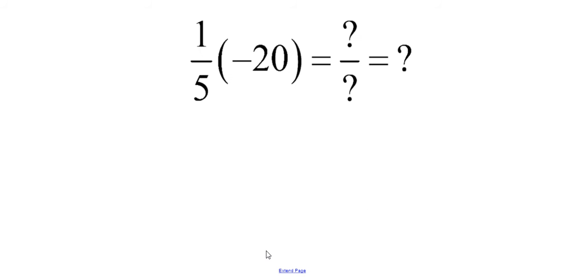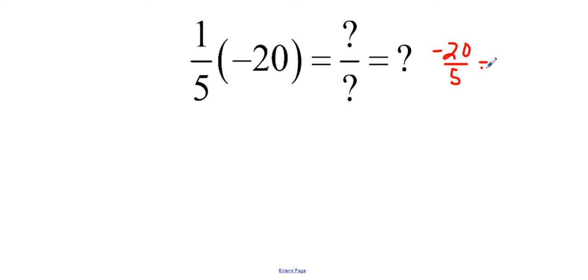1 fifth times negative 20 equals negative 20 divided by 5, which equals negative 4.